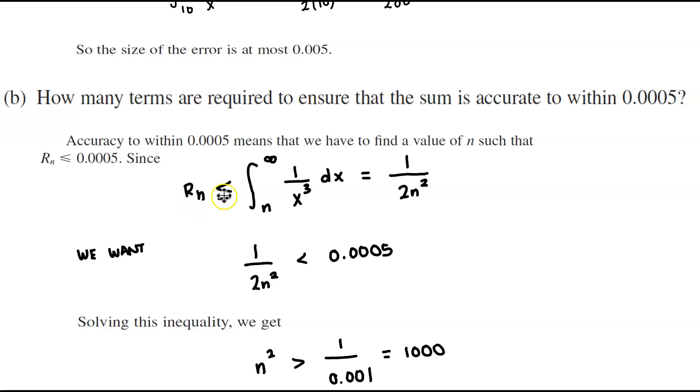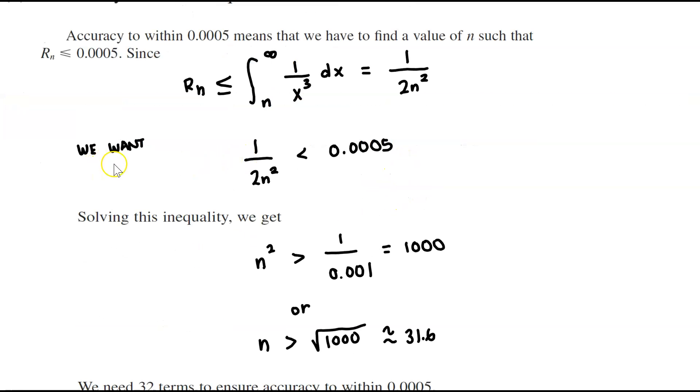Now since r subscript n is less than or equal to 1 over x cubed dx from n to infinity was equal to 1 over 2 to the n squared. And what we want is to write 1 over 2 n squared is less than 0.0005.